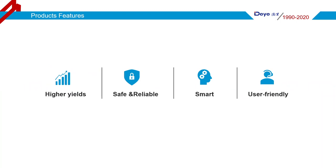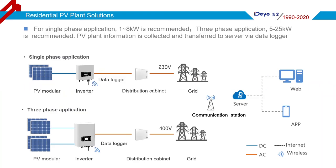For single-phase system applications, the 1-8 KW model is recommended for a household rooftop. For 3-phase applications, the 5-25 KW model is recommended for a commercial building rooftop.